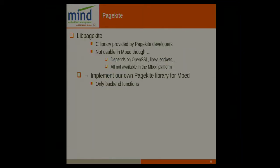What options do we have to implement PageKite on an embedded device? We looked at libPageKite, provided by the PageKite community, which is a C library. But it was not really usable on an embedded device because it depends on OpenSSL, LibEV, and normal sockets — none of which are present in embedded. So we needed to implement our own library with all the backend functions we needed.